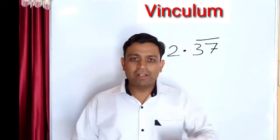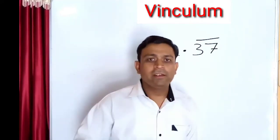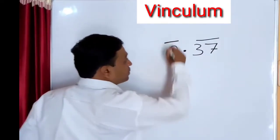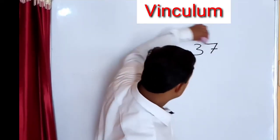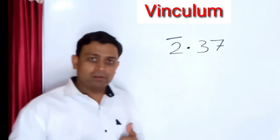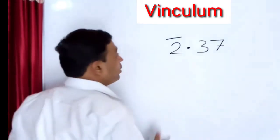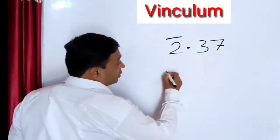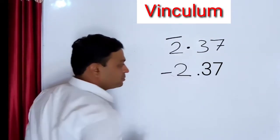If anywhere while studying maths you find this bar on the LHS side instead of RHS side of the decimal point, if this vinculum is on the number which is on left side of the decimal point, then you have to take that number as minus.